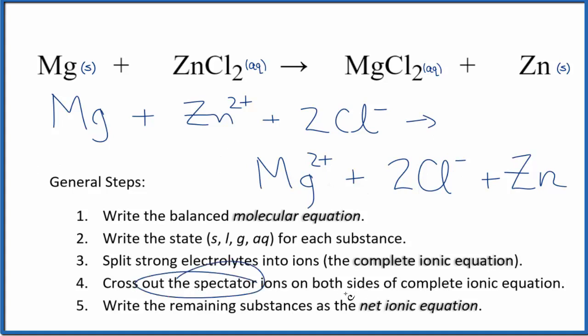Now we're going to cross out the spectator ions on both sides of the complete ionic equation. On the reactants, I have two chloride ions. In the products, I also have two chloride ions. We consider these spectator ions and can cross them out, but that's it.